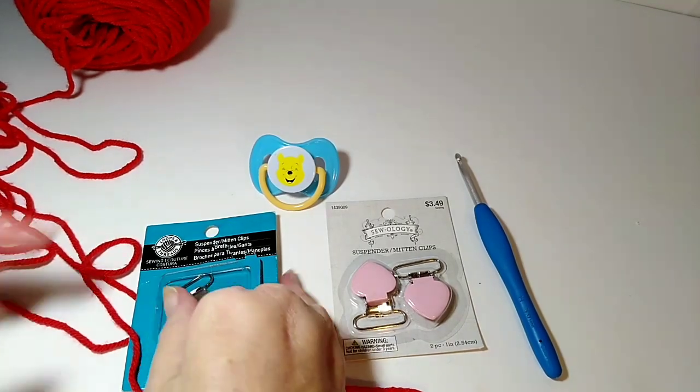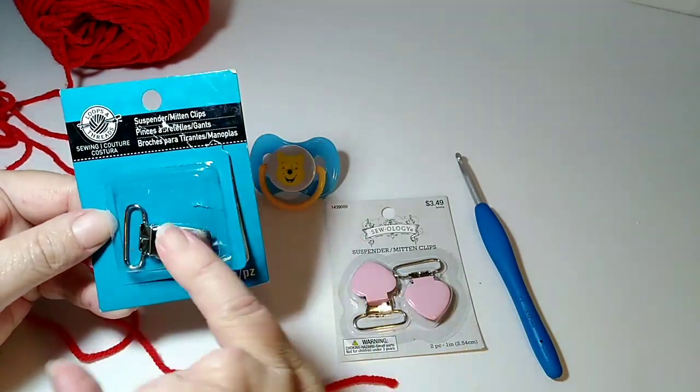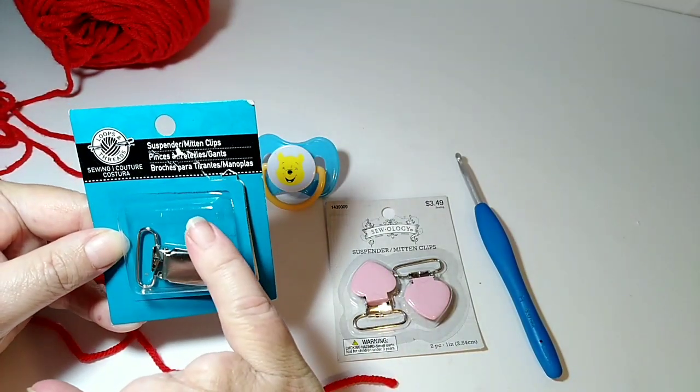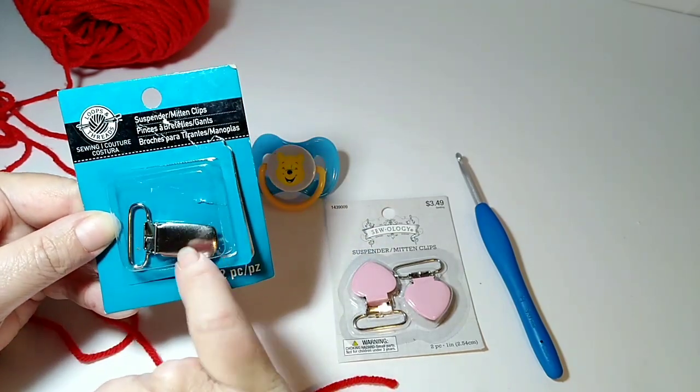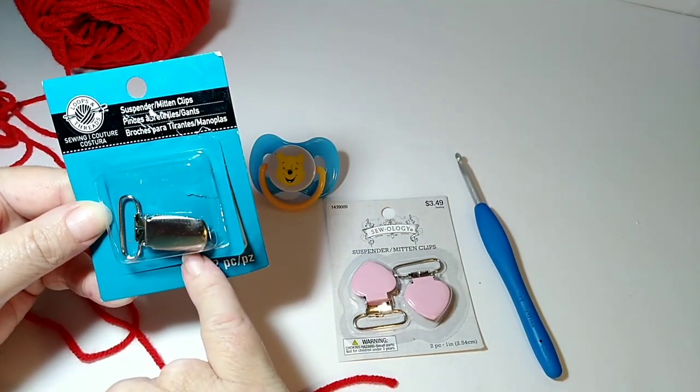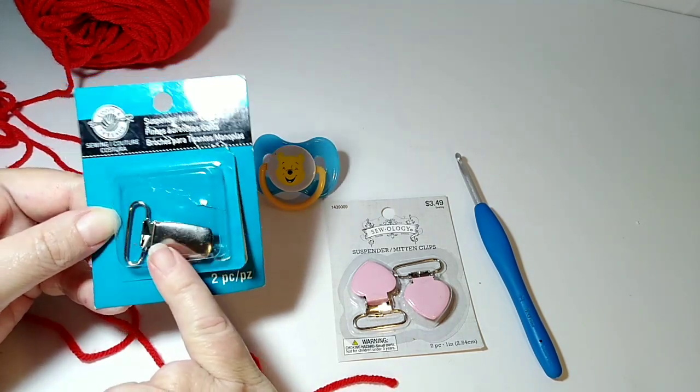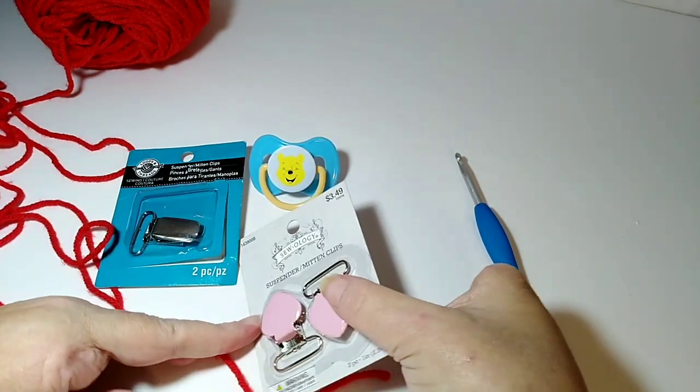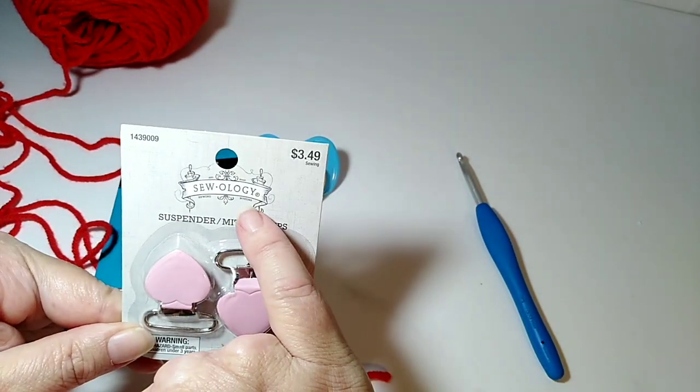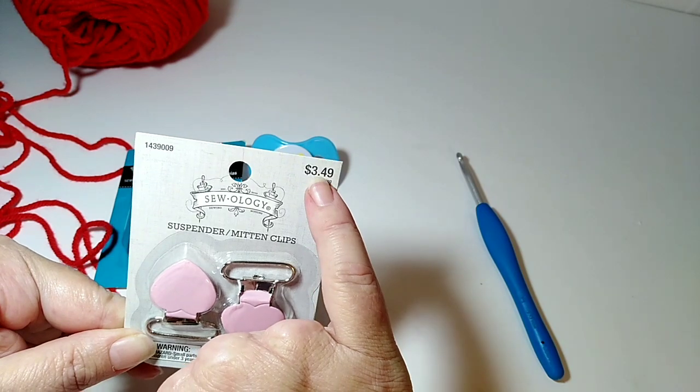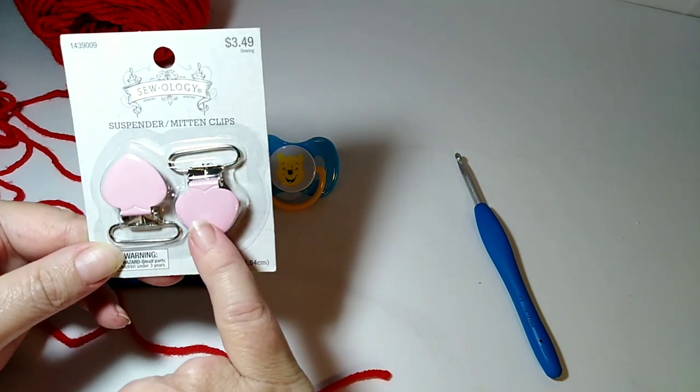Okay, so for this project I'm using Suspender Mitten Clips. This set, it was two in the package, came from Michael's, Suspender Mitten Clips by Loops and Thread. I don't know how much this package was because actually my son Elijah brought this home to me. This set I picked up at Hobby Lobby. It's by Zoology and it was $3.49 for two with pink hearts, which I thought was cute.